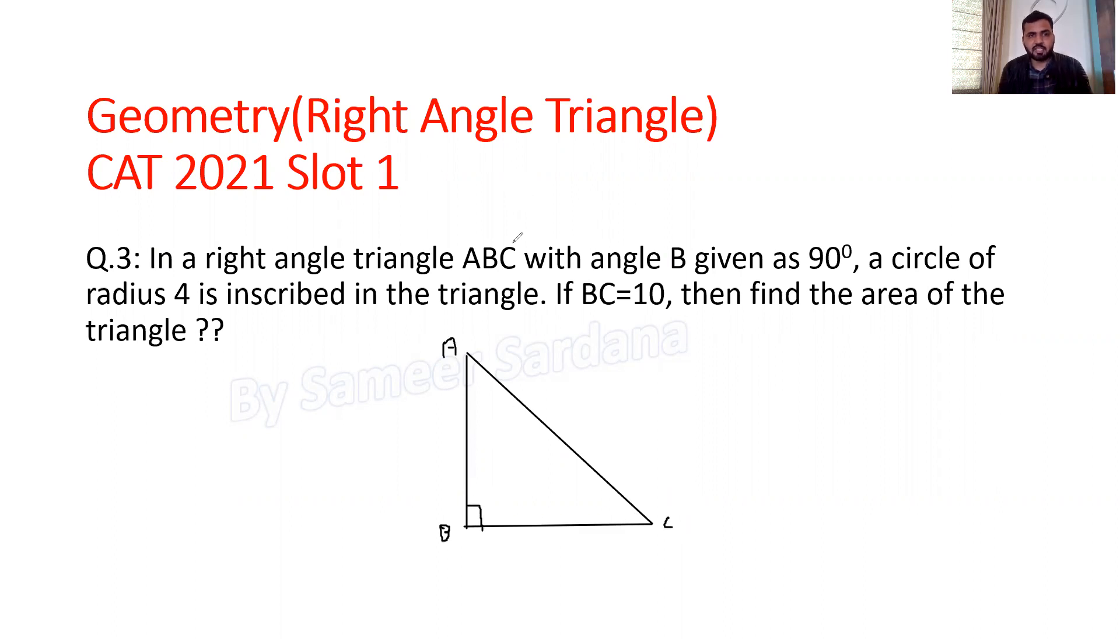A circle of radius 4 is inscribed in the triangle. The length of BC is given as 10 centimeters. Find the area of the triangle. That's our question.